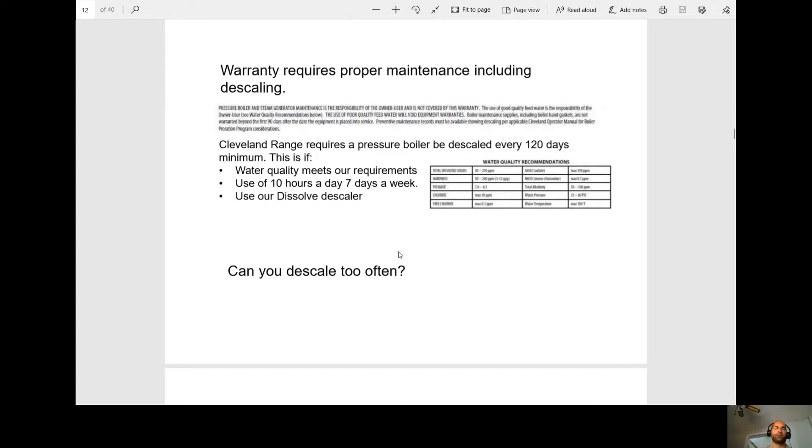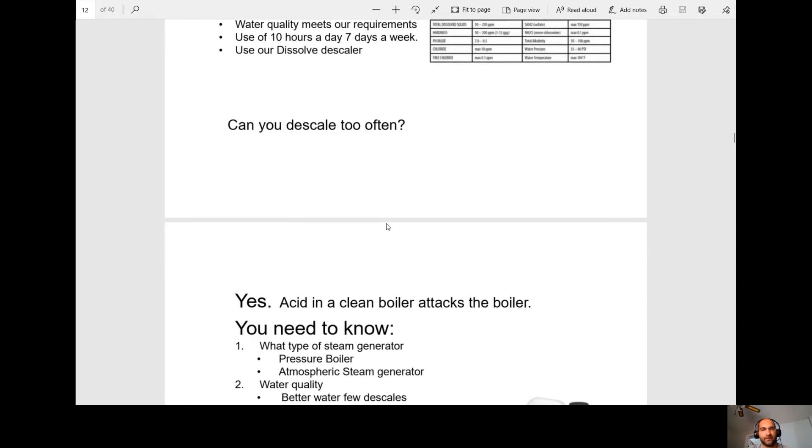So in order to have warranty, you need proper maintenance, which includes descaling. A pressure boiler should be descaled every 120 days, and that's if it meets the water quality. So that's when you do the test, test the water. And that's based on 10 hours a day, 7 days a week. And they want you to use their dissolved descaler. Can you descale too often? Yes. The acids will actually start to eat away at the boiler walls.